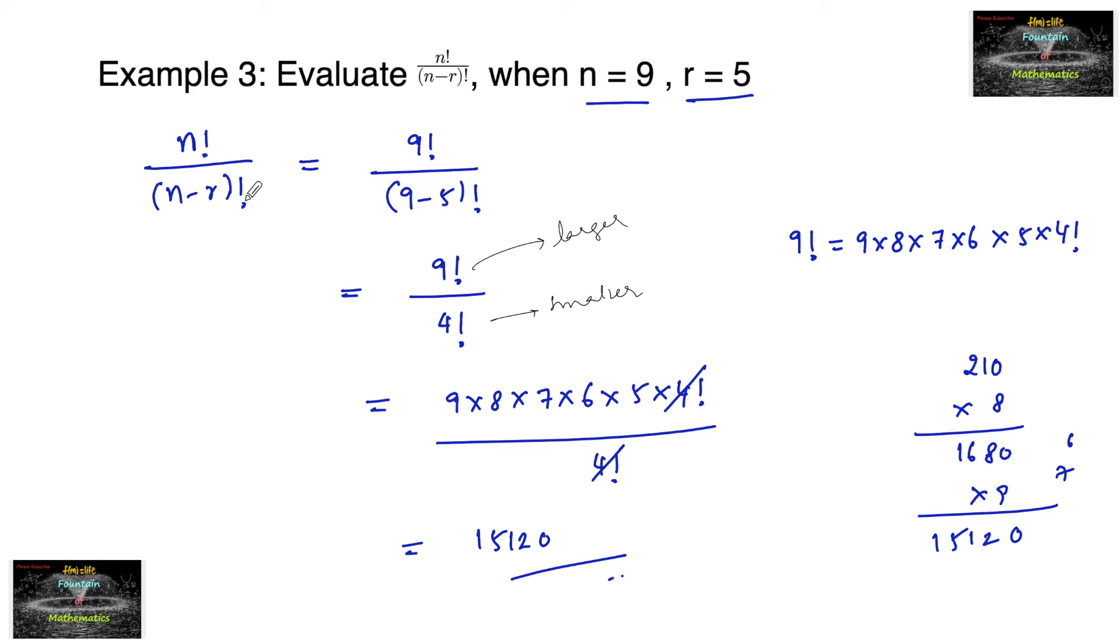The value of n factorial upon n minus r factorial when n is equal to 9 and r is equal to 5, you get the value 15,120.